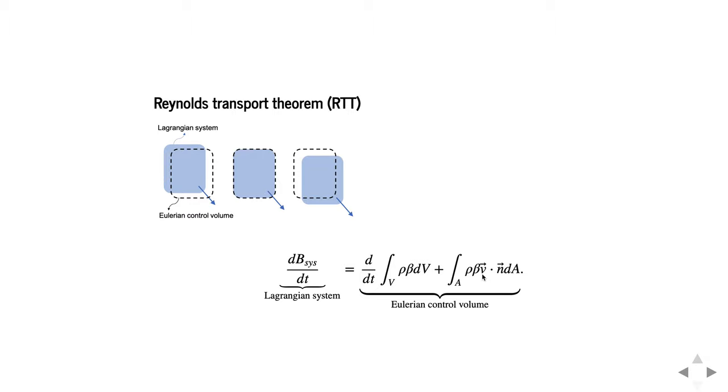Technically, V here is the relative velocity between the system and the control volume, but if the control volume isn't moving, then it's just the velocity of the system.